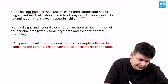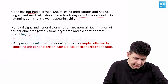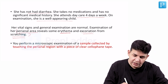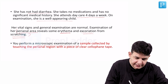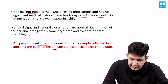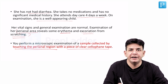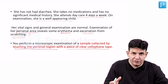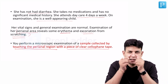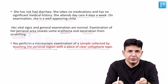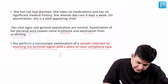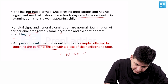Examination of the perianal area shows erythema — that is redness — and excoriation from the scratching. This is characteristic of perianal pruritus. You perform a microscopic examination of the sample collected by touching the perianal region with a piece of clear cellophane tape. This procedure is termed NIH swabbing.